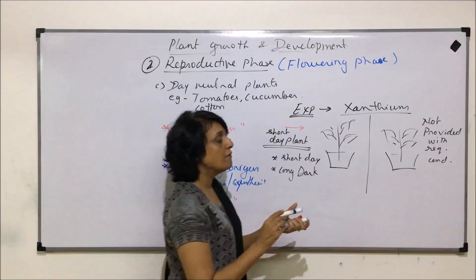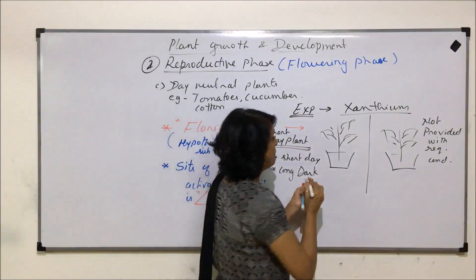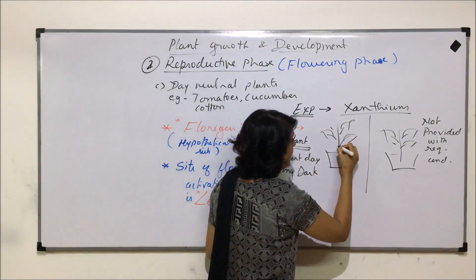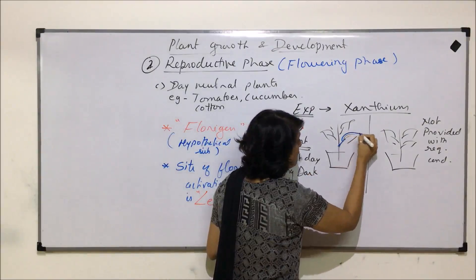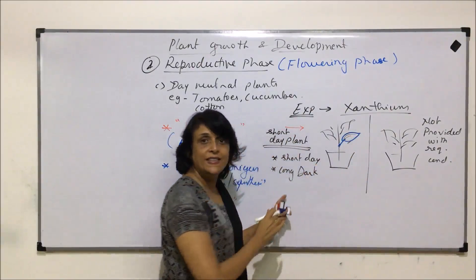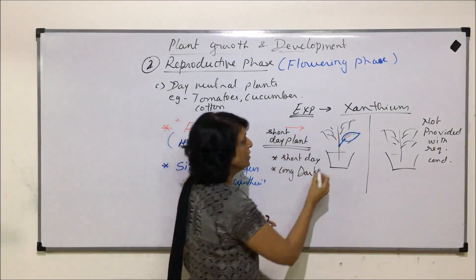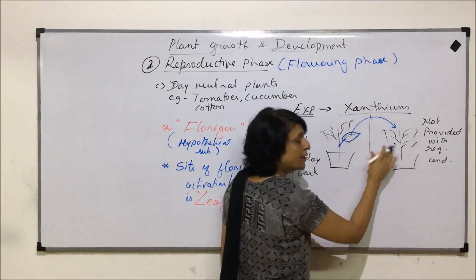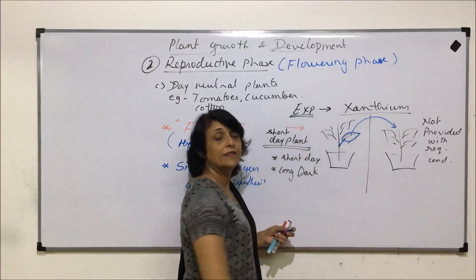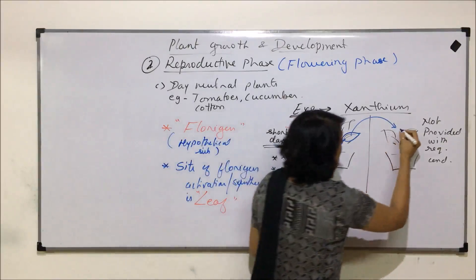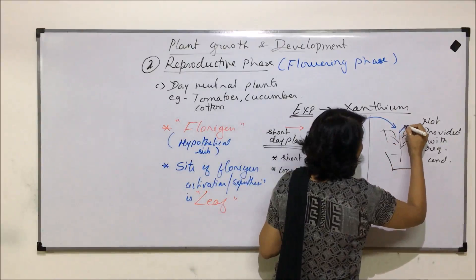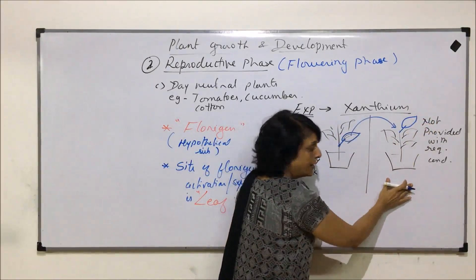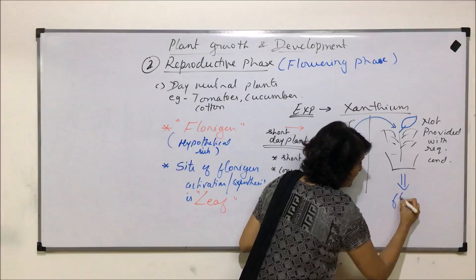After this, one leaf from the plant which was provided with the required conditions was grafted onto the other plant. After grafting, this plant showed flowering.